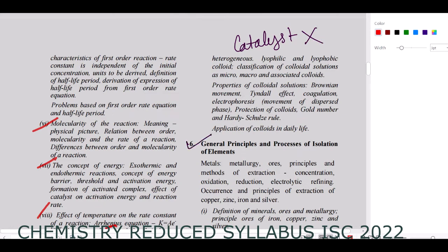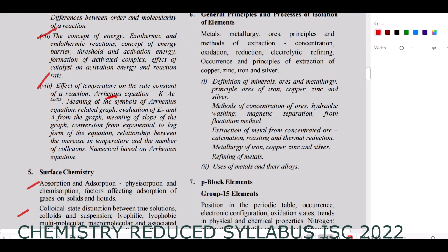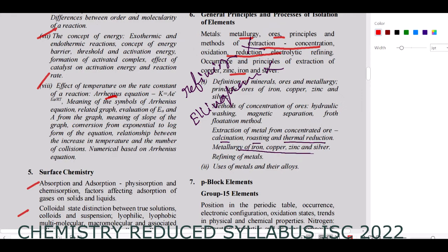For Metallurgy (General Principles and Process of Isolation): ore, principle methods of extraction, concentration, oxidation, and reduction extraction processes are there. The processes of calcination, roasting, thermal reduction, metallurgy of iron, copper, zinc, and silver, as well as uses of metals and alloys, are present. However, the refining of metals and the Ellingham diagram are both removed.